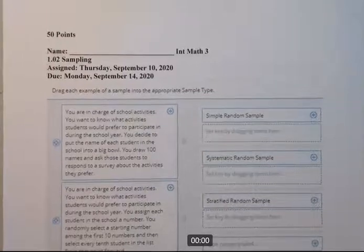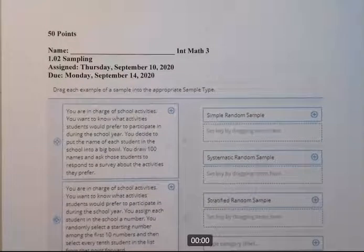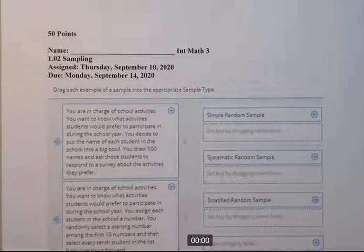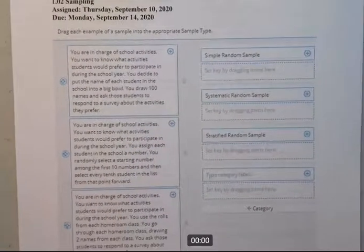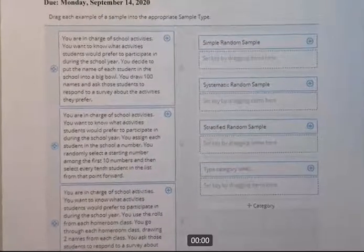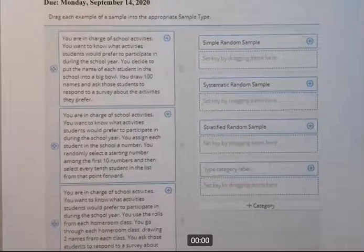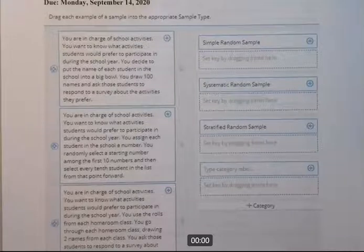This is integrated math, Mr. Mellinger's class. This is the solution set for 1.02 sampling. So this is a fairly simple lesson. It's just learning different ways of sampling to collect data so that you can then do the statistical analysis on it and learn whatever you're trying to learn.